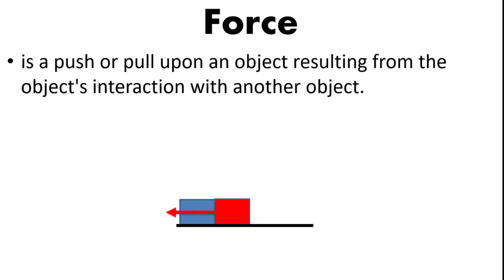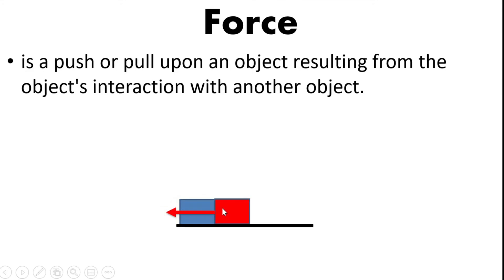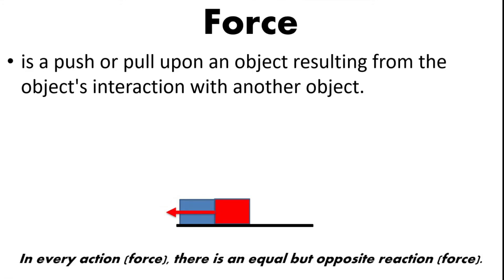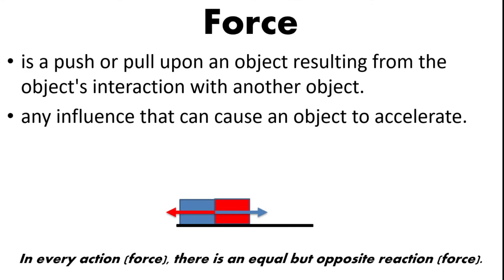Based on the third law of motion, every action force has an equal but opposite reaction. If the red box exerts a force of 10 N to the left, the blue box also applies a reaction force of 10 N to the right. This is the third law of motion — the law of interaction: in every action, there is an equal but opposite reaction. A force is any influence that can cause an object to accelerate if there is a net force acting on the body.